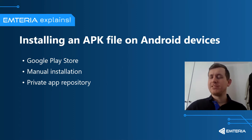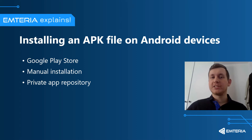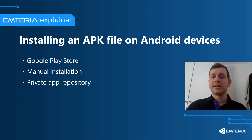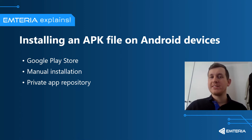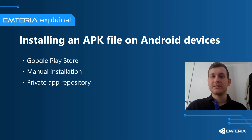Assuming you have the APK file, but how do you install it on an Android device? Typically users never see an APK file because Android handles app installation in the background via Google Play Store or another app distribution platform. However, it is also possible to install apps from a source other than the official Play Store. There are three ways to install an APK file: with the Google Play Store or other repositories, manually, or with a private app repository.